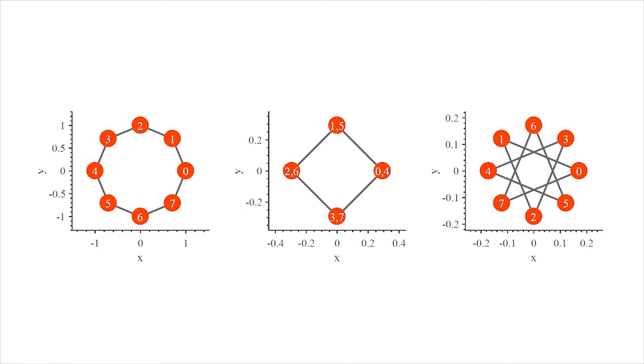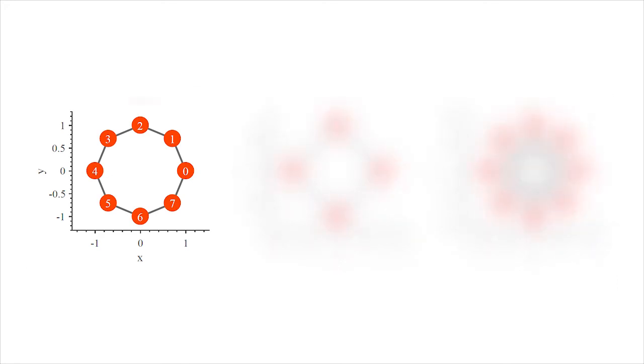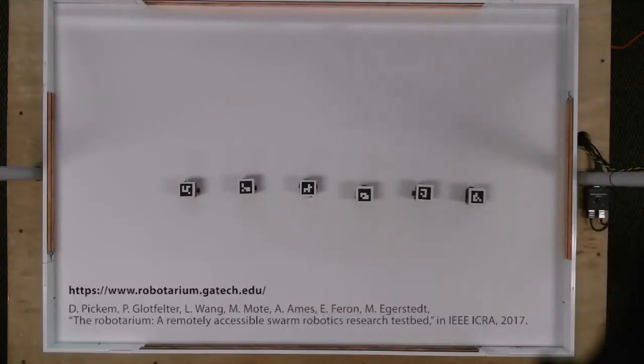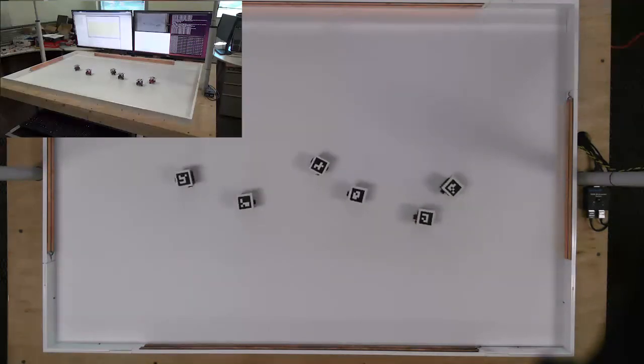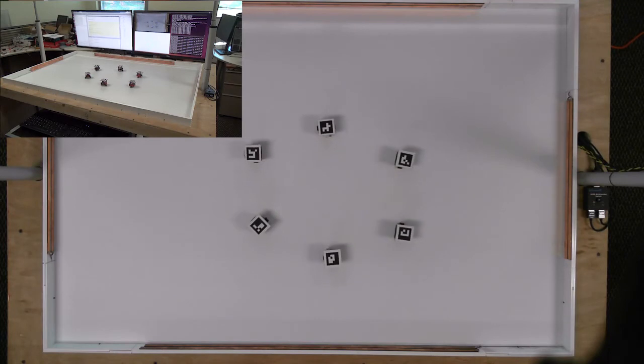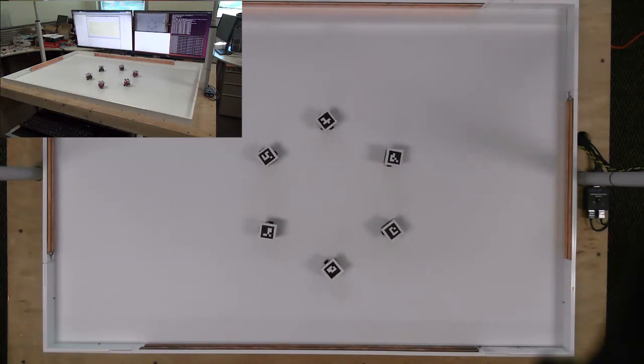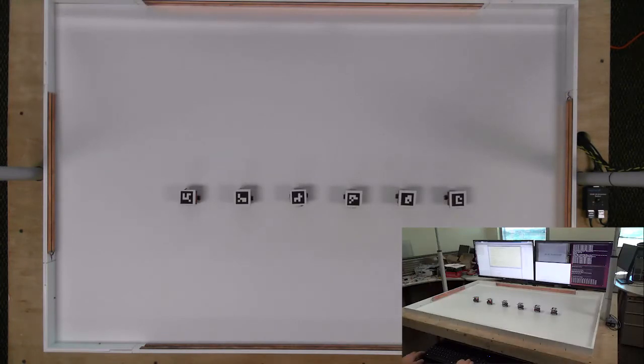To validate the proposed approach experimentally, the control strategy is tested on the Robotarium platform. Six robots are used in the experiments to achieve a hexagon formation. The robots are distinguished using ArUco tags and their positions are estimated from the image provided by an overhead webcam.